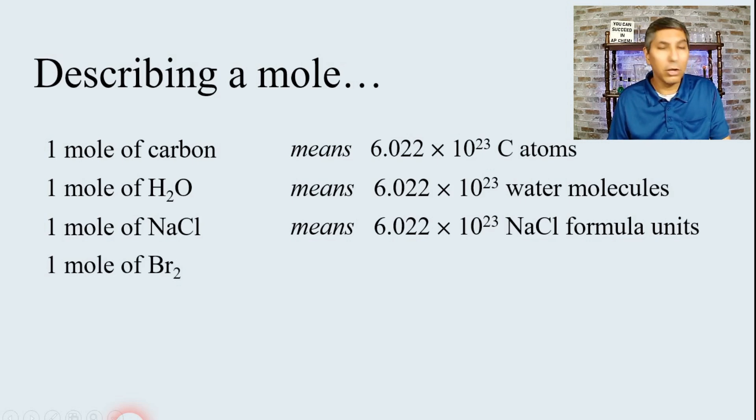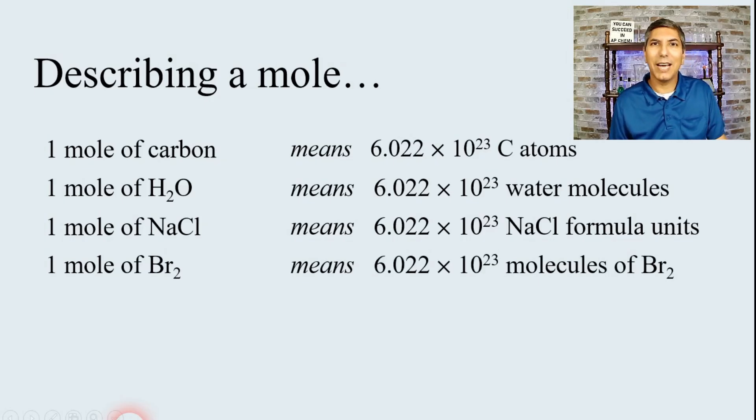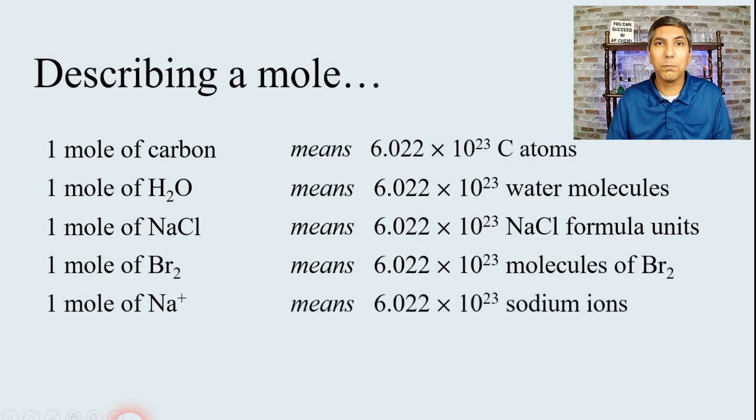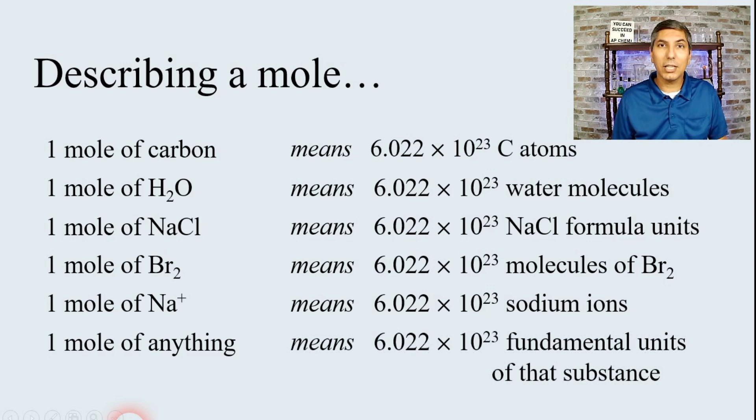So, we use the corresponding unit for whatever substance we're talking about. If we have, let's say, a molecule of bromine, one mole of Br2 would be 6.022 times 10 to the 23rd molecules of Br2, bromine. If we had ions like sodium cations, for example, one mole of Na+ would involve 6.022 times 10 to the 23rd sodium ion.